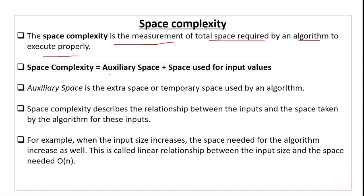Space complexity is equal to the auxiliary space plus the space used for the input values. The input values used in the algorithm also occupy memory space. That space plus the extra space together form the total space complexity.